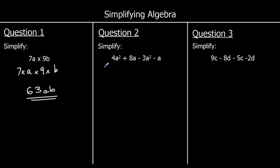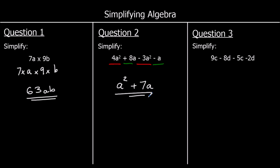Question 2: we're collecting like terms — adding together things that are the same. We've got a squared terms and a terms; we can't add a squareds to a's because they're different numbers. For a squared: 4 take away 3 is 1, which we write as a squared. For a: positive 8 take away 1 is 7. So the answer is a squared plus 7a.